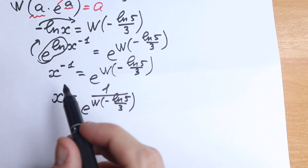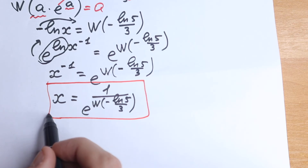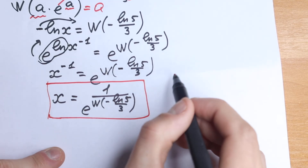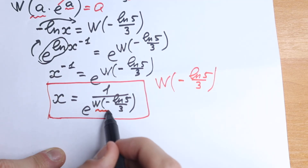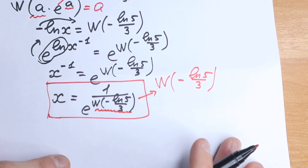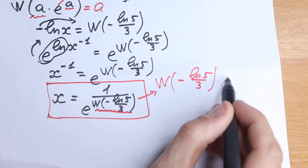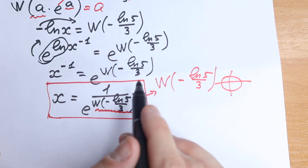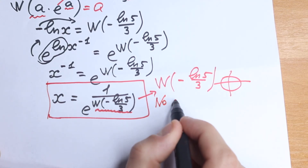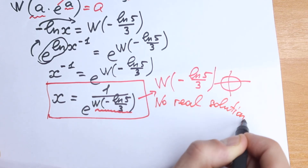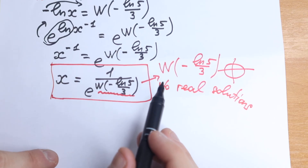We solved this interesting question. But what about the exact value? If you look up in an internet library the Lambert W function of minus natural log 5 over 3 and plug it into a scientific or graphing calculator, you'll see that this Lambert W function does not exist. There is no point of intersection — we are not talking about real roots here. These lines do not intersect, and we can easily say that right here we have no real solutions.